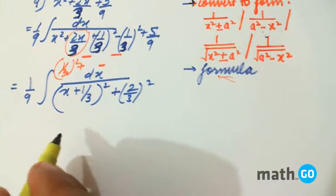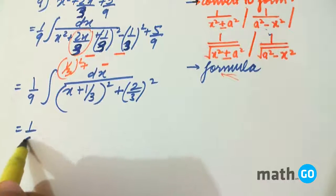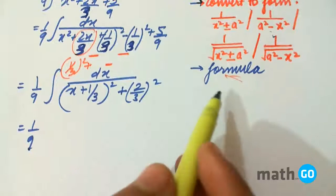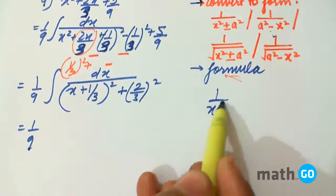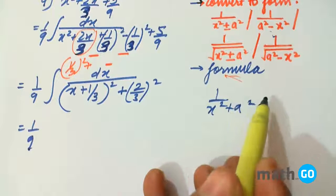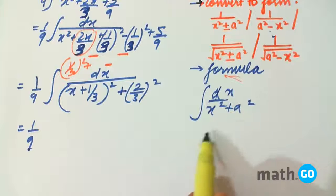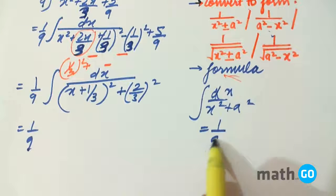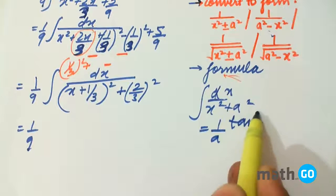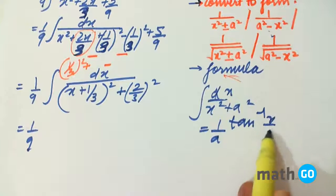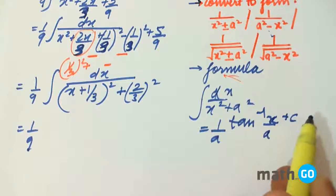What is the formula? It resembles 1/(x² + a²). The formula for this expression is (1/a) tan⁻¹(x/a) + c.